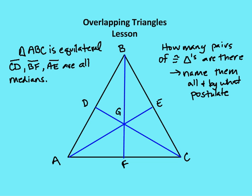One of the problems I give to my students as extra credit — and one which I suggest you attempt — is to find out how many pairs of congruent triangles there are in this given triangle on the diagram. I have triangle ABC, the larger triangle, which is an equilateral triangle, and segments CD, BF, and AE are all medians. See what number you can come up with, and I'll give you an answer in the subsequent lesson about how many pairs of congruent triangles there are.